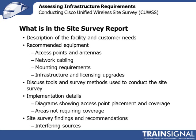Then you want to put in the recommended equipment and be as detailed as you can. Talk about what the access point equipment is and where they should be located. Talk about the antennas you're using, and if you're using external antennas, which direction should they be placed. Give a very detailed description of the network cabling that you'll be using to connect the access point. The mounting requirements are very important — are you attaching it to a ceiling, to a wall, above the ceiling? What mounting equipment do you actually need? You'd also put in all of your infrastructure requirements and switch upgrades.